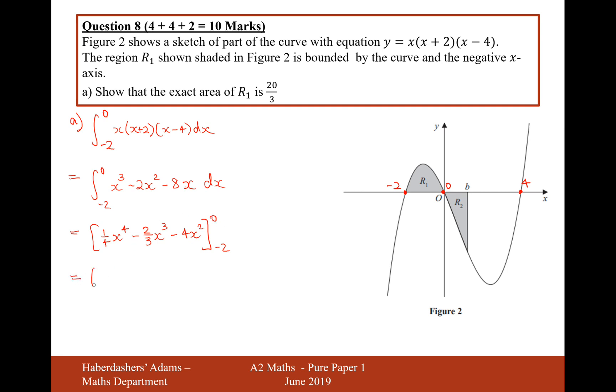Substitute 0 in and you get 0. Then subtract minus 2 going in. That would be 16 divided by 4, which is 4. Then plus for the triple negative, that would be plus 16 over 3, and minus 16. When we simplify all of this, it's 4 minus 16, that's minus 12. As a fraction over 3 that's minus 36 over 3, plus 16 over 3, which simplifies to minus 20 over 3.